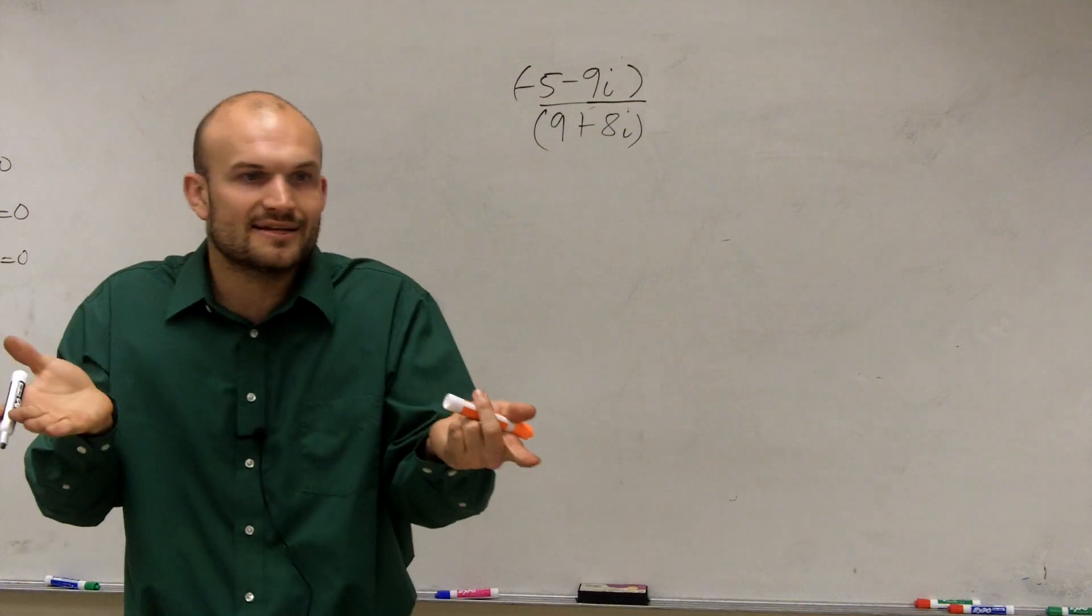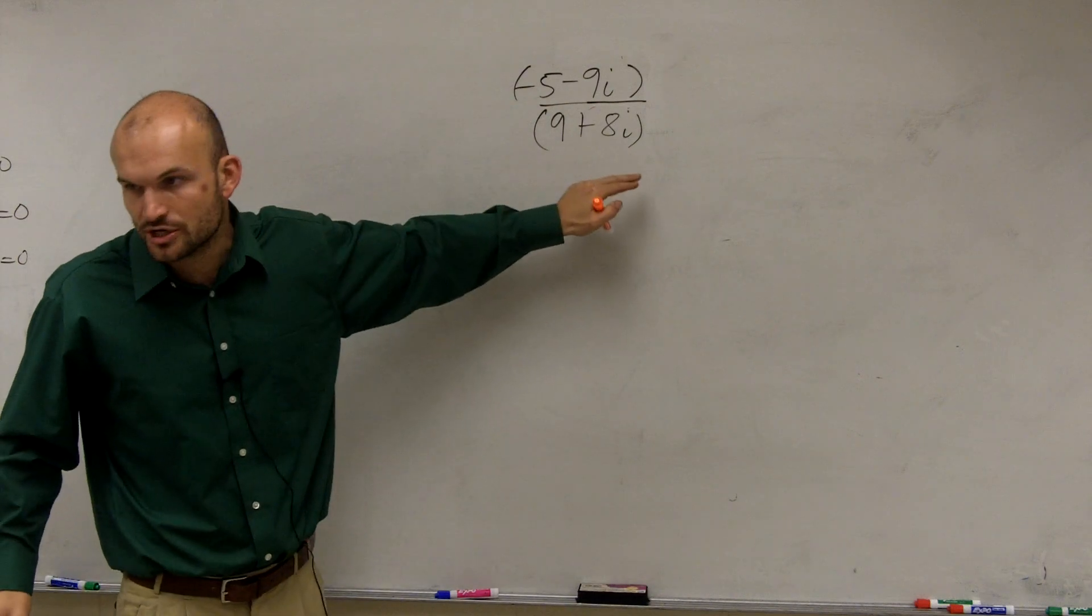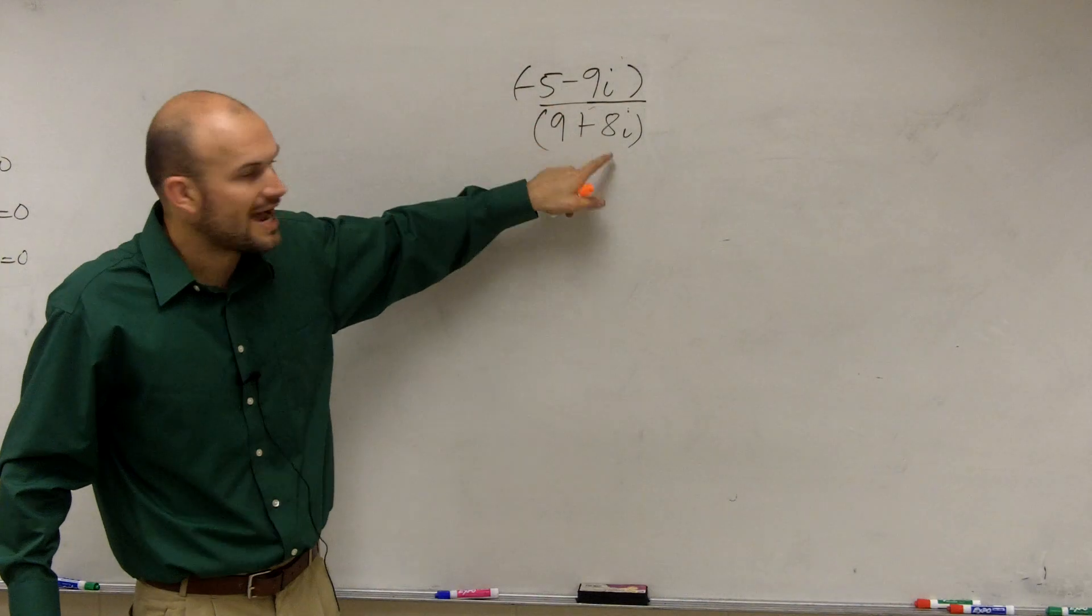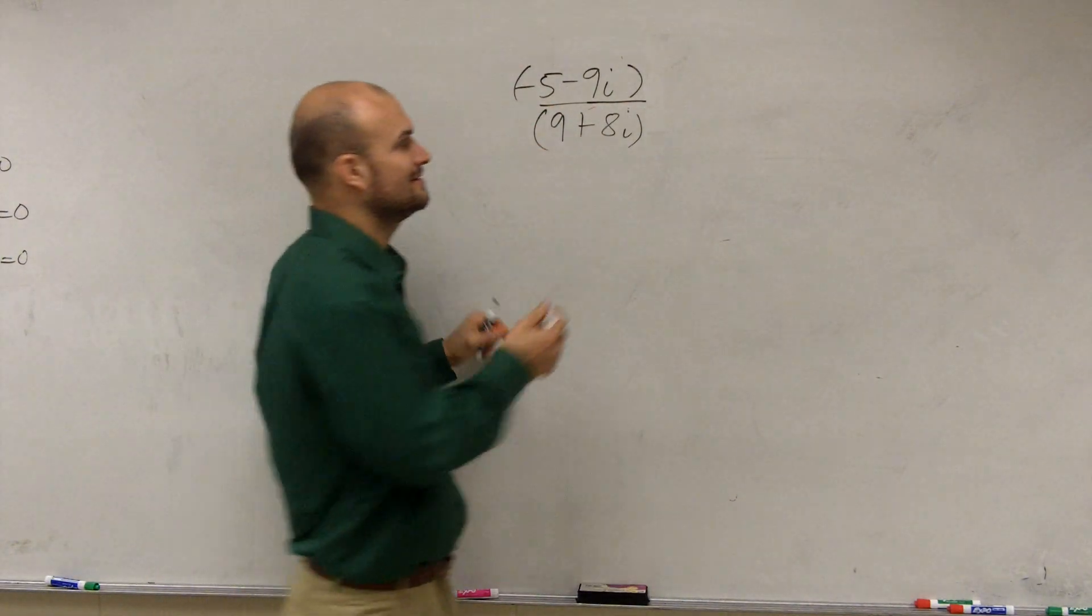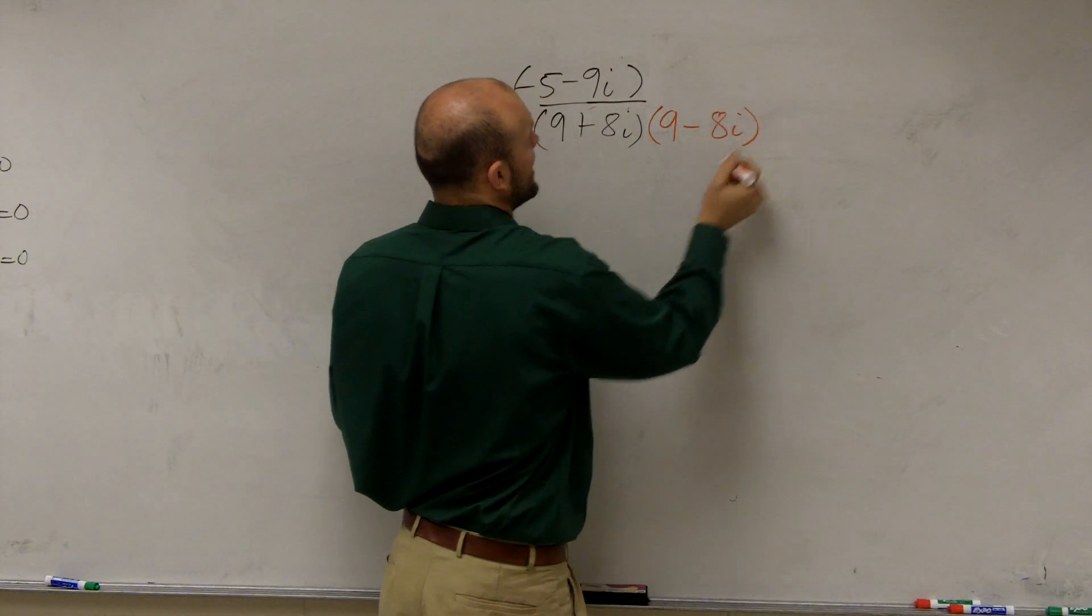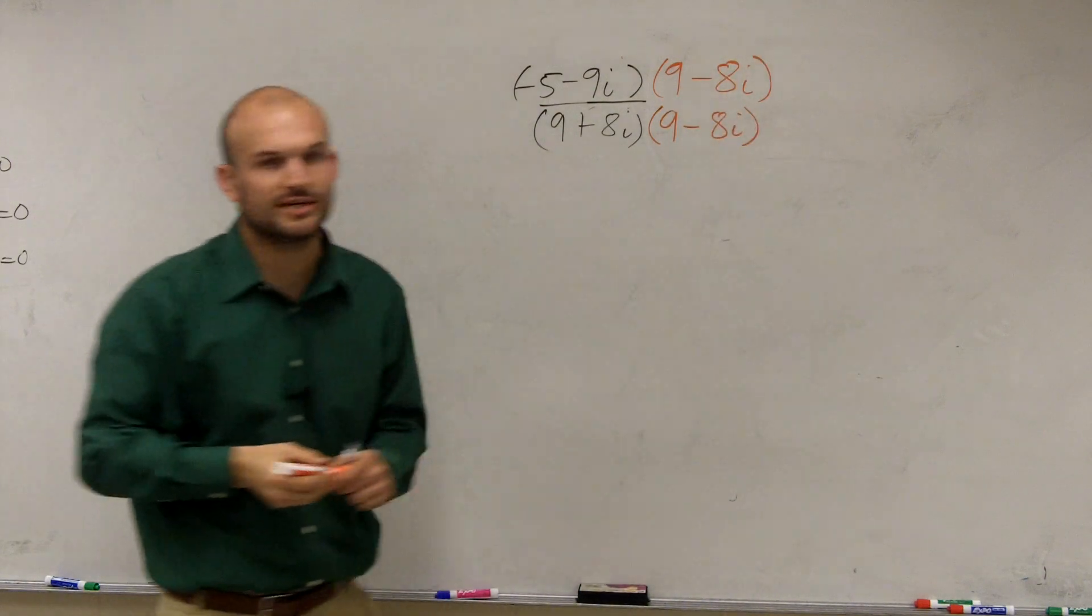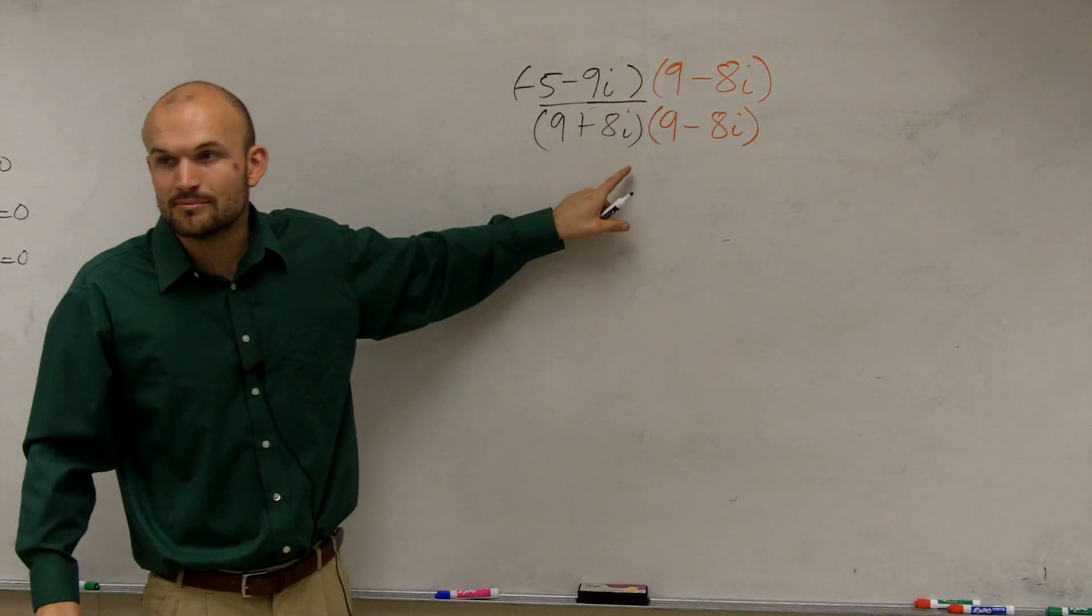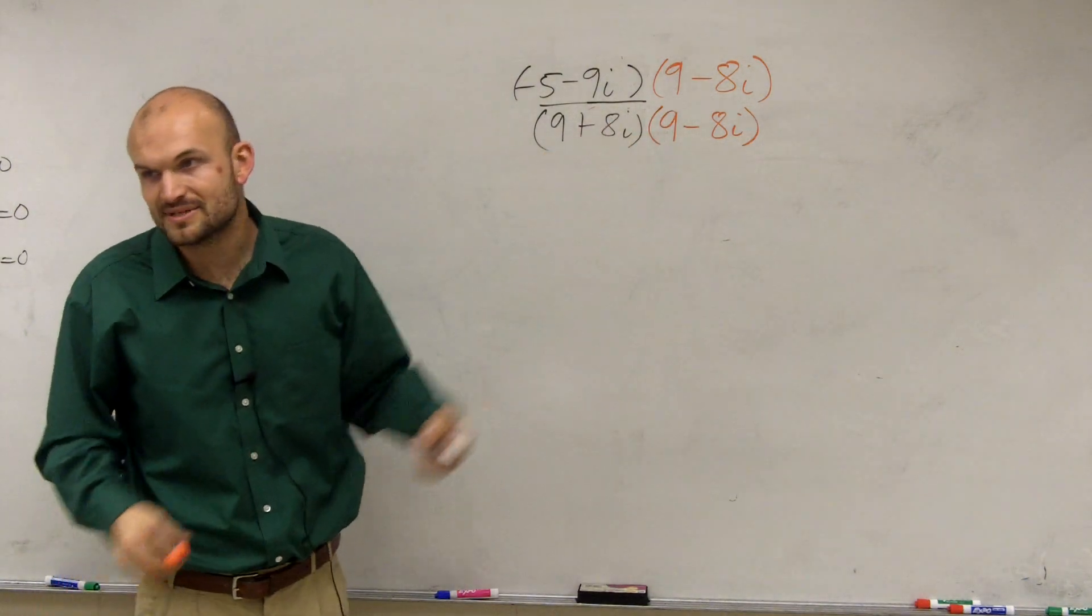When it's just 8i or i on the bottom, you multiply by i over i. But when you have a binomial, that means two different terms, two different monomials separated by addition or subtraction, you have to multiply by what we call the conjugate. And what you guys notice about the conjugate is it's the exact same as my other monomial, except now it has an opposite sign.